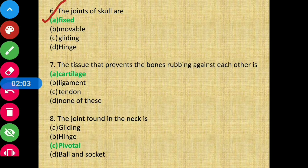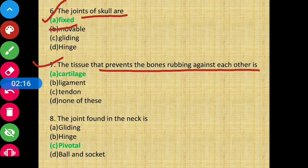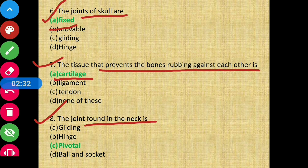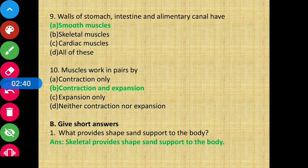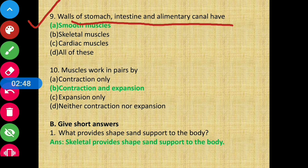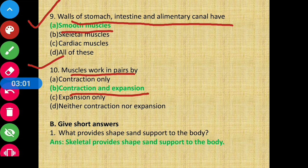Question number 6: the joints of skull are — those are fixed. Option A, fixed is the correct answer. Question number 7: the tissue that prevents the bones from rubbing against each other — that tissue is cartilage, option A is the correct answer. Question number 8: the joint found in the neck — that is pivotal joint, pivotal is the correct answer. Question number 9: walls of stomach, intestine and alimentary canal have smooth muscles — smooth muscles is the correct answer. Question number 10: muscles work in pairs by contraction and expansion — option B is the correct answer.